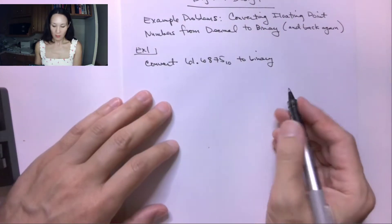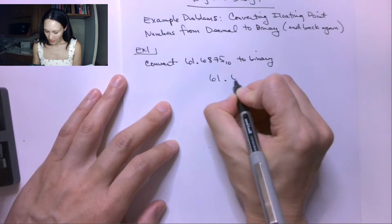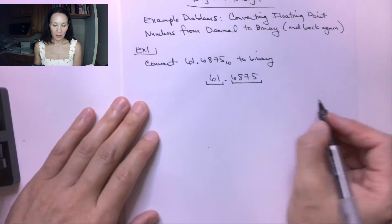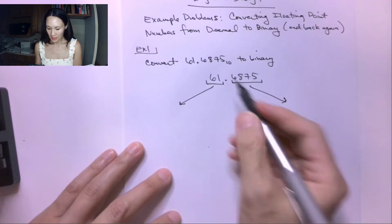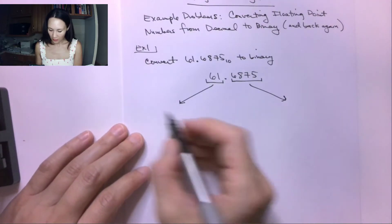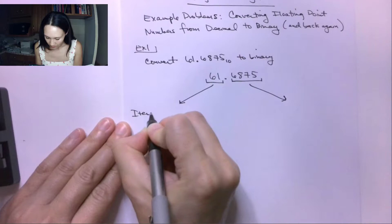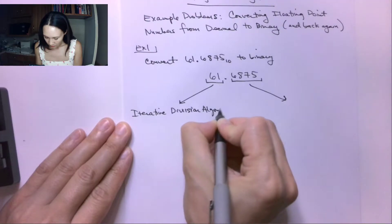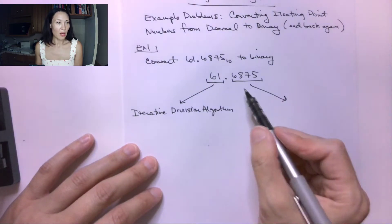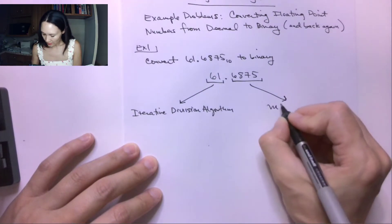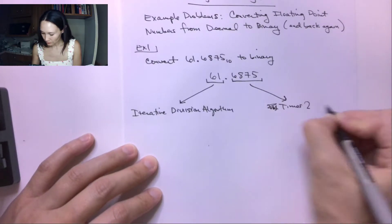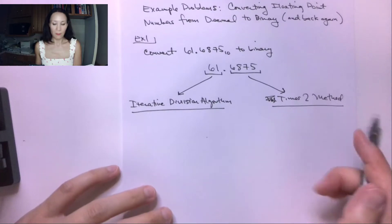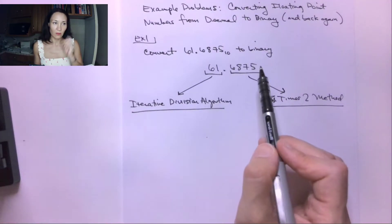The method here is we have our number that has basically two parts: we've got the whole number part, and then we've got the fractional part. So we're going to split this up into two problems. The whole number part conversion into binary we're going to use the iterative division algorithm, and for the fractional part we're going to use what I call the times two method. We basically have two problems wrapped up into one, because we have to handle the whole number part and the fractional part differently.